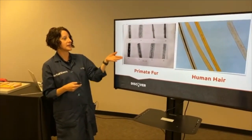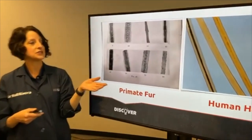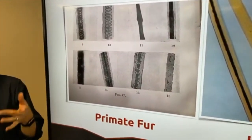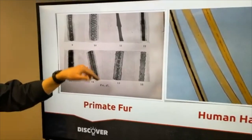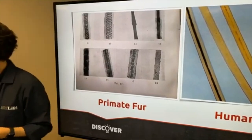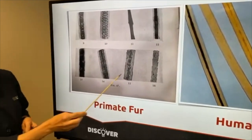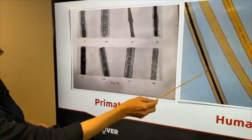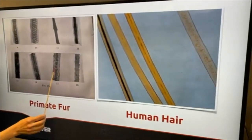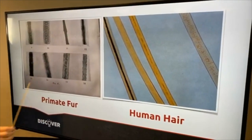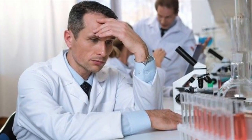Now we'll take a look at a few samples of animals and humans side by side. This first example is four different samples of primate fur. The next two are samples of human hair — remember, human hair has a thinner medulla pattern, as evidenced here. The medulla is this pattern running up the center of the hair shaft. If you take a look, you're going to see the distinct difference between human and animals. Primate fur is distinctly different from human hair — there are no similarities at all in their medulla patterns.